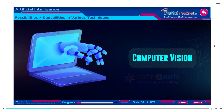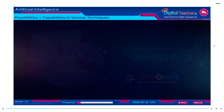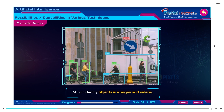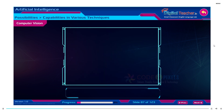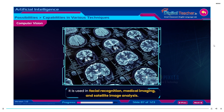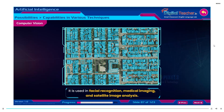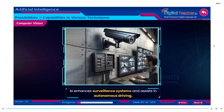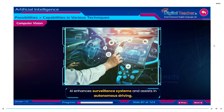Computer vision. AI can identify objects in images and videos. It is used in facial recognition, medical imaging and satellite image analysis. AI enhances surveillance systems and assists in autonomous driving.